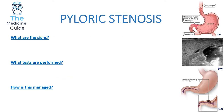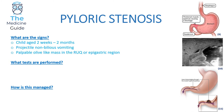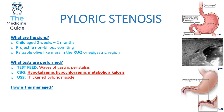Pyloric stenosis arises from hypertrophy and hyperplasia of the pyloric muscles. It's typically found in children aged between two weeks and two months. The child will have projectile non-bilious vomiting, and there will be a palpable olive-like mass found in the right upper quadrant or the epigastric region. Doctors can perform a test feed — after giving the baby a little bit of milk, the baby will have visible waves of gastric peristalsis radiating across the abdomen.